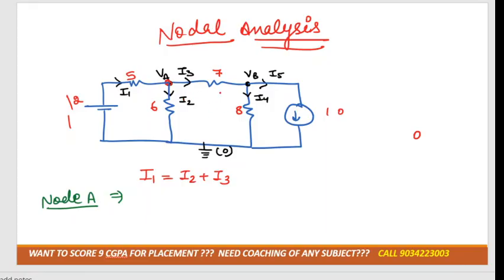Now we have to convert it into the form of node V by R. I1 is how much? As you can see, I1 is moving from 0 to Va, so I'm writing down 0 minus Va. If in between we are having battery, we have to take the second sign of the battery, that is plus 12, divided by the resistance 5. Similarly, the value of I2 is how much?